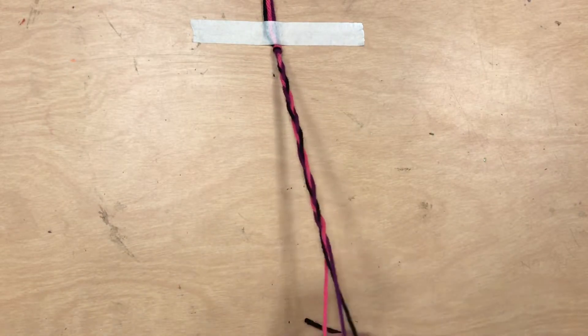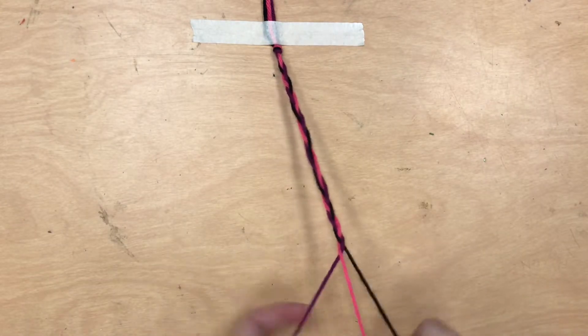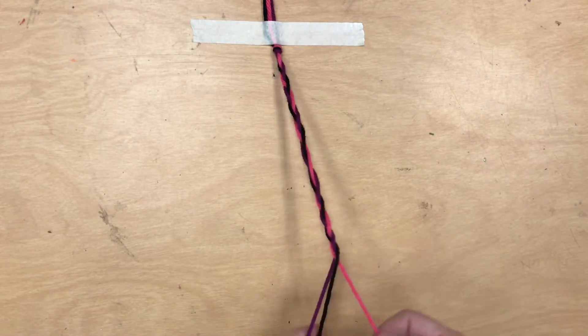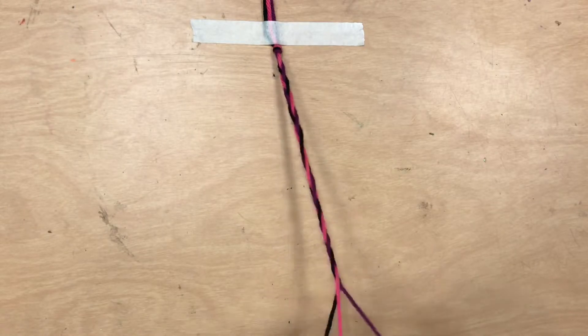If you lose track in the middle of braiding you can always look at the top and take a close look. But also this might not be a perfect braid and that's okay.